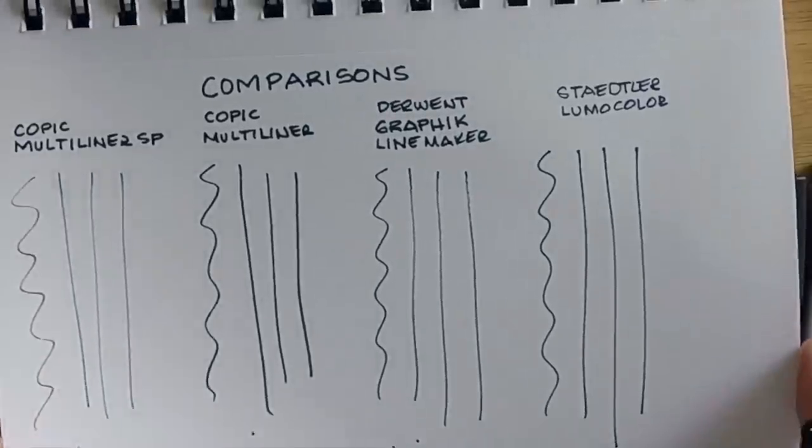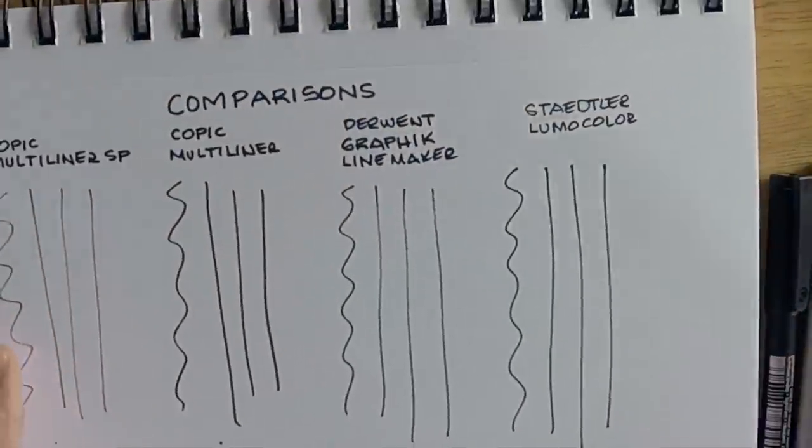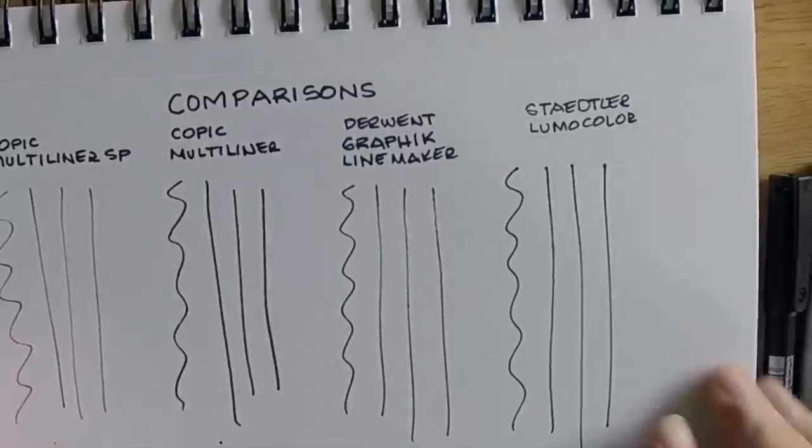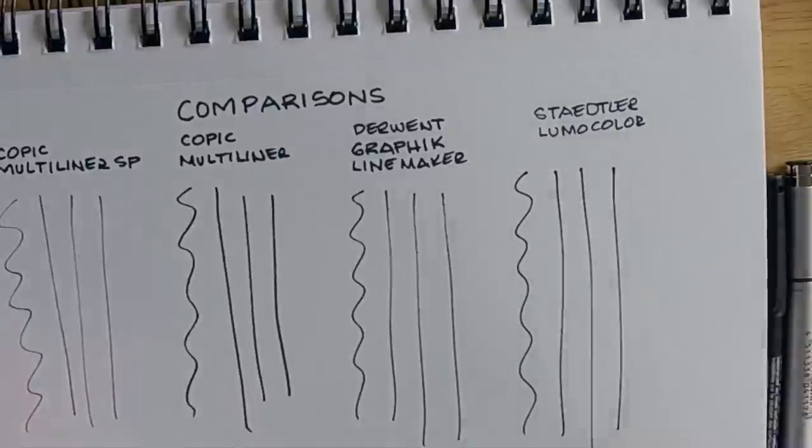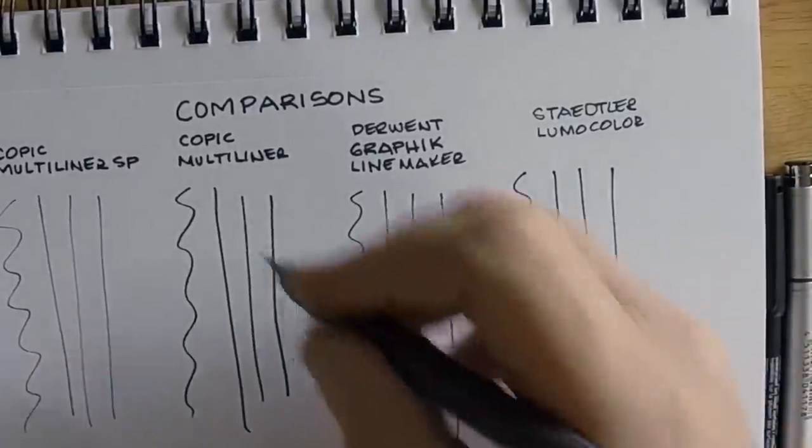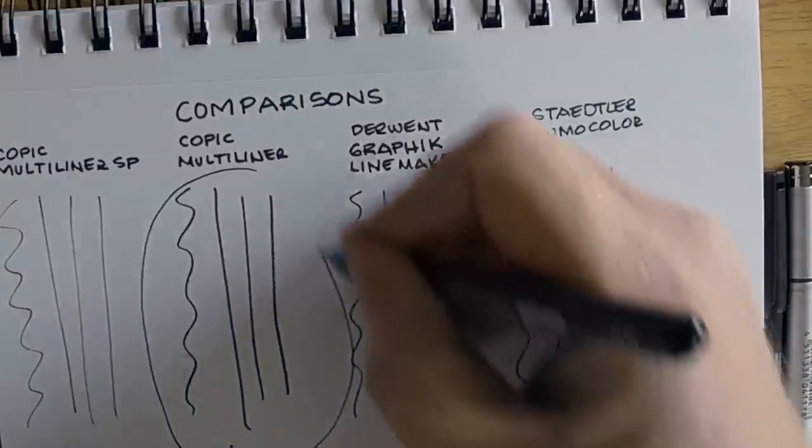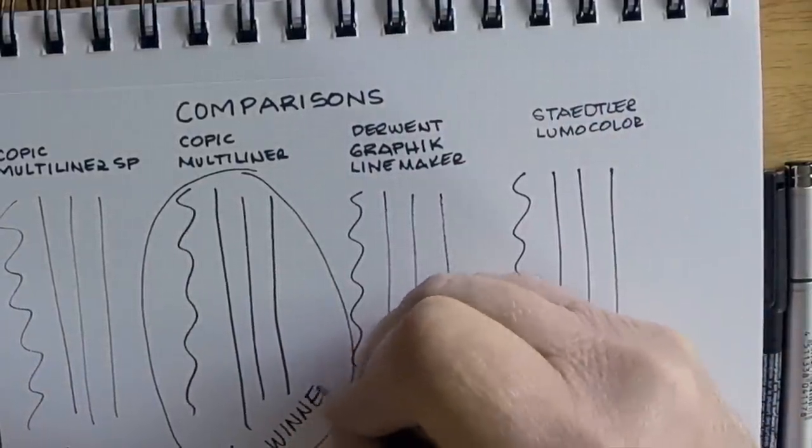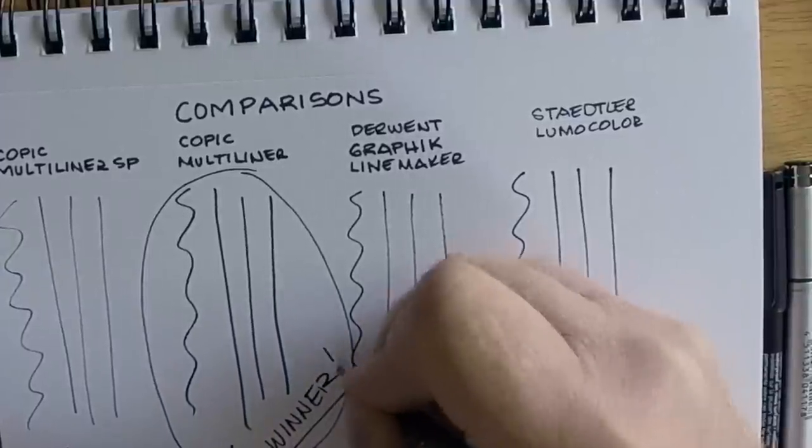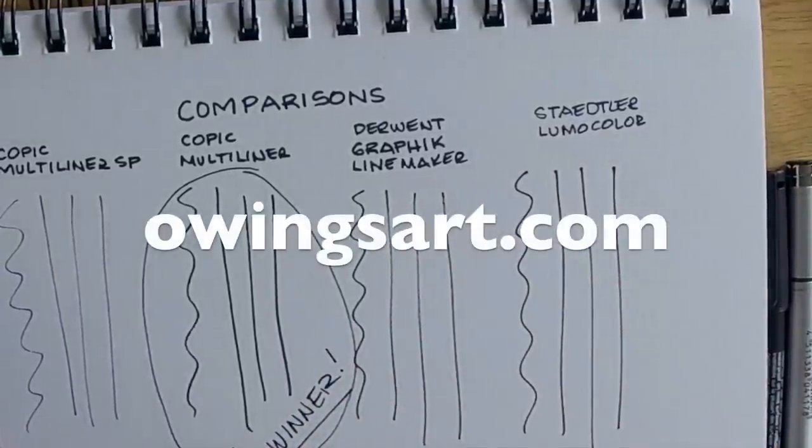Out of the four I tried, I'd say the Copic Multiliner—plus you're getting some bleed through. If you look, the Staedtler will give you some bleed through whereas the other three don't. But of the ones I tried, the Copic Multiliner performed the best, so I'd say that one, I'll circle it here, and we'll call it a winner. That's the pen I'd recommend, which is surprising for me since I usually use the SP.